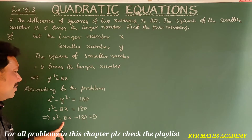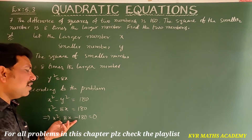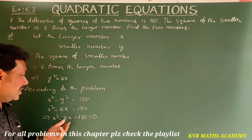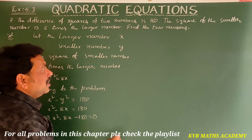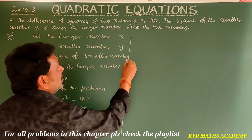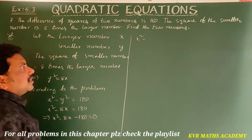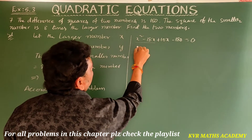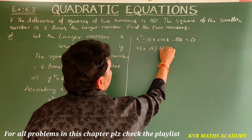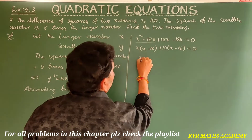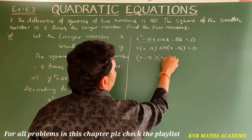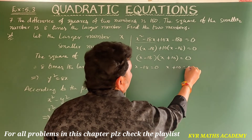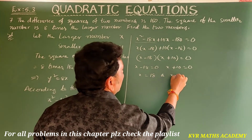This is the quadratic equation X squared minus 8X minus 180. Let us find the roots by the factorization method. For 180, we can use 18 and 10 since 18 minus 10 is 8. So we write X squared minus 18X plus 10X minus 180 equals 0. Taking X common from the first two terms gives X(X minus 18), and taking 10 common from the last two gives 10(X minus 18). So (X minus 18)(X plus 10) equals 0, giving X equals 18 or X equals minus 10.